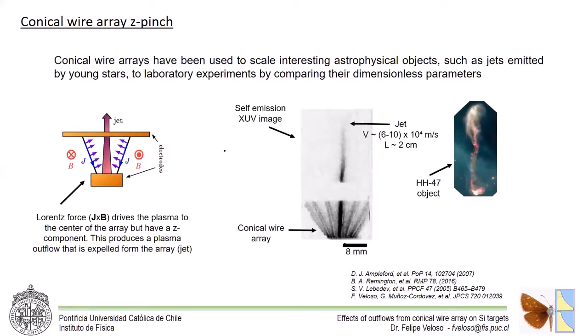Here you can see a self-emission image taken with an MCP camera where the outflow of a dense plasma jet is emitted, and together with it is a picture of an astronomical object HH47 emitted by a young star.